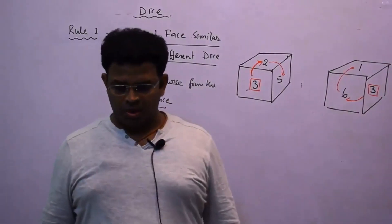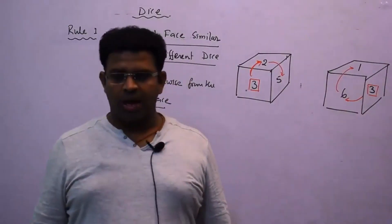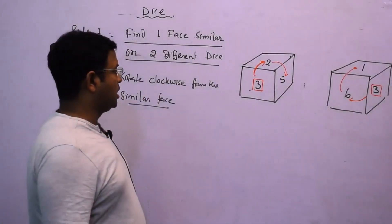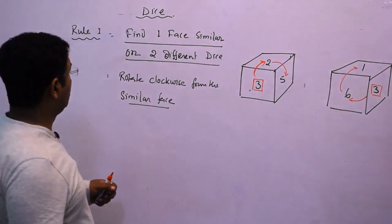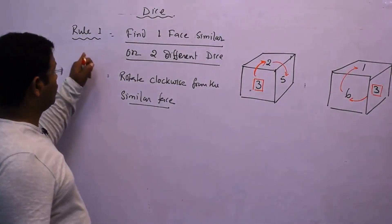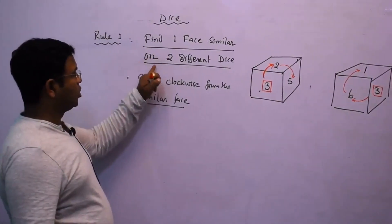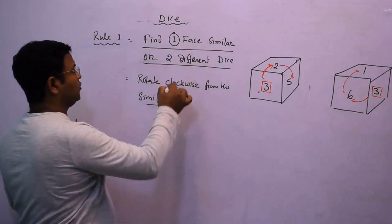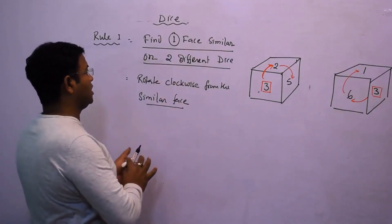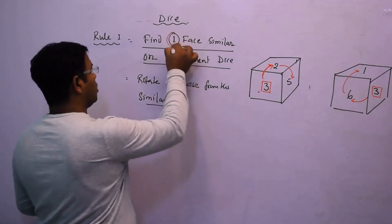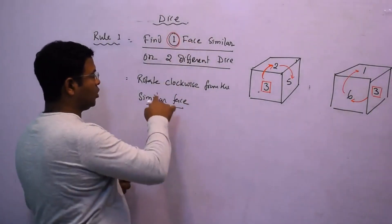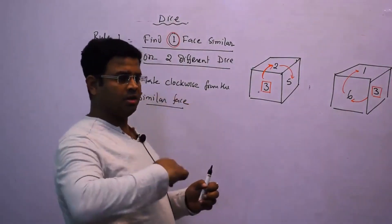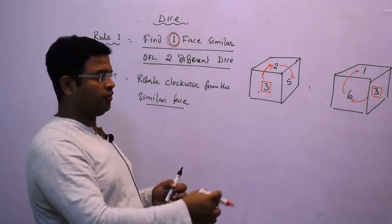Dear students, we are going to see how to solve dice-based questions very easily. The rule is: find one similar face on two different dice, and rotate clockwise from the similar face.